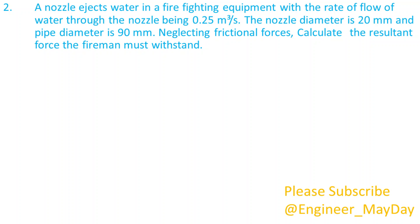A nozzle ejects water in a firefighting equipment with the rate of flow of water through the nozzle being 0.25 cubic meters per second. The nozzle diameter is 20 mm and pipe diameter is 90 mm. Neglecting frictional forces, calculate the resultant force the fireman must withstand.